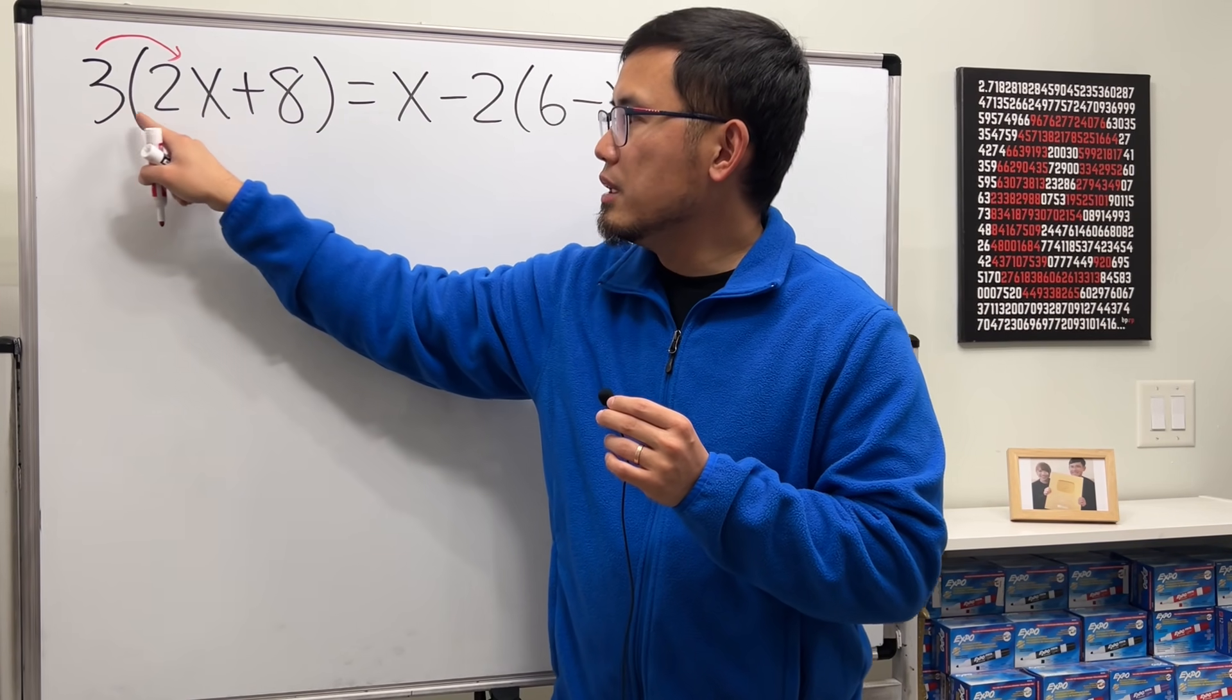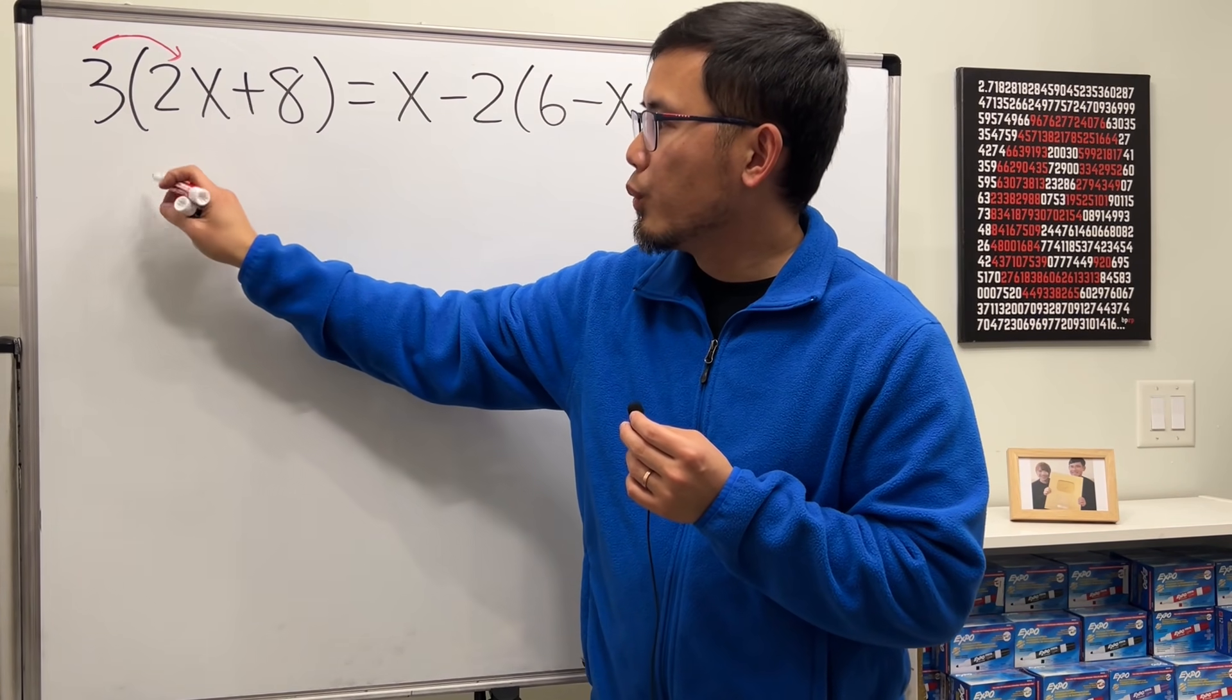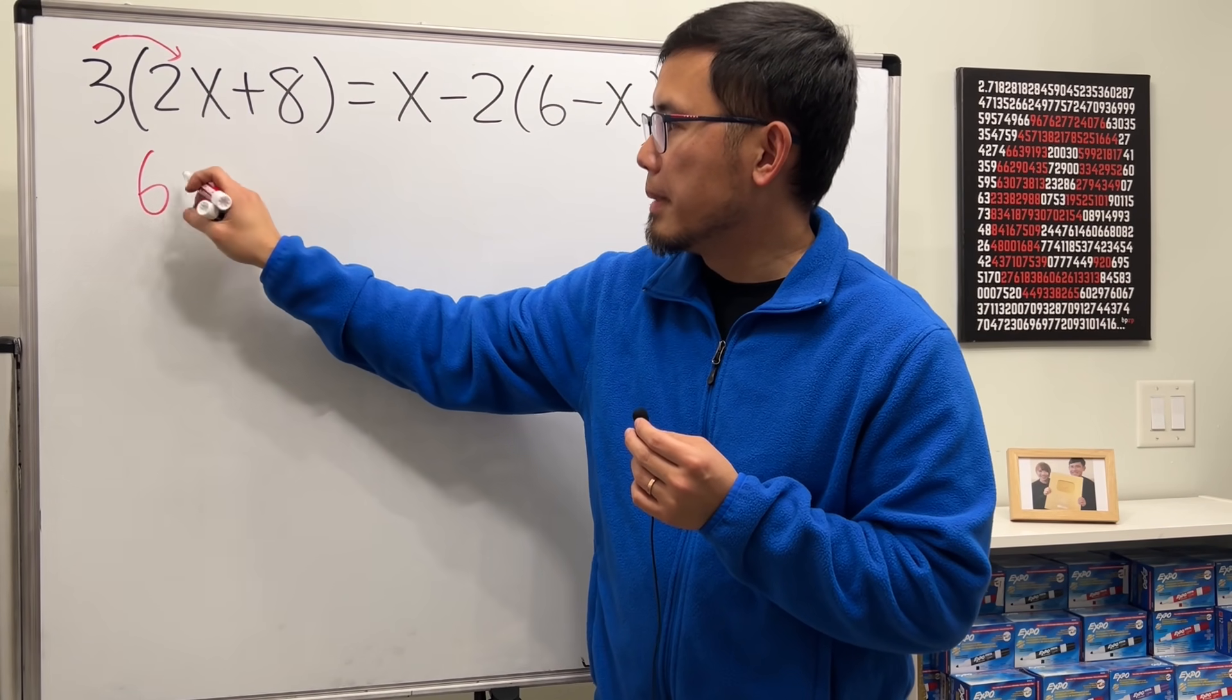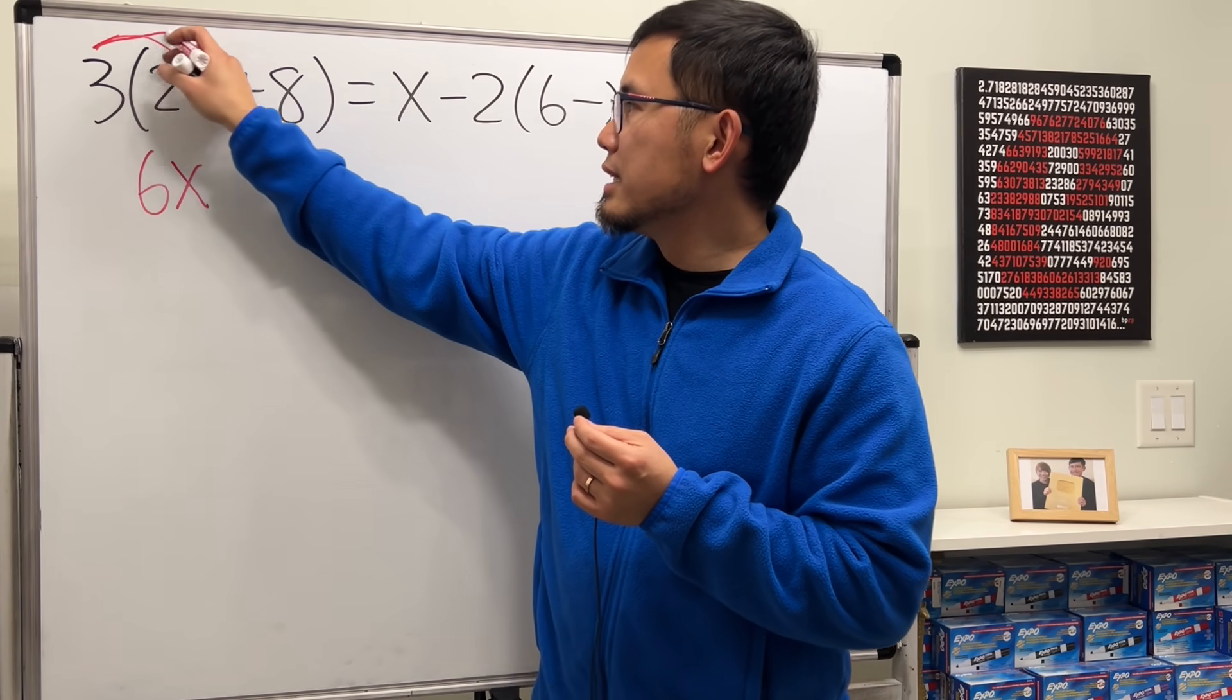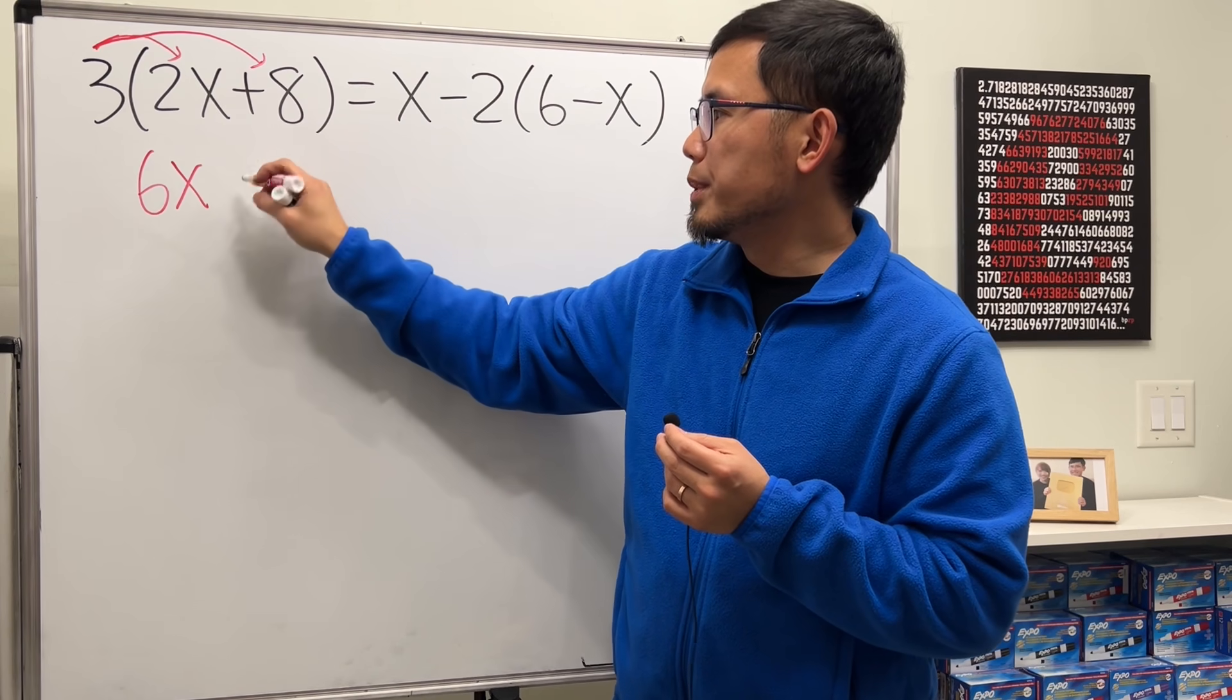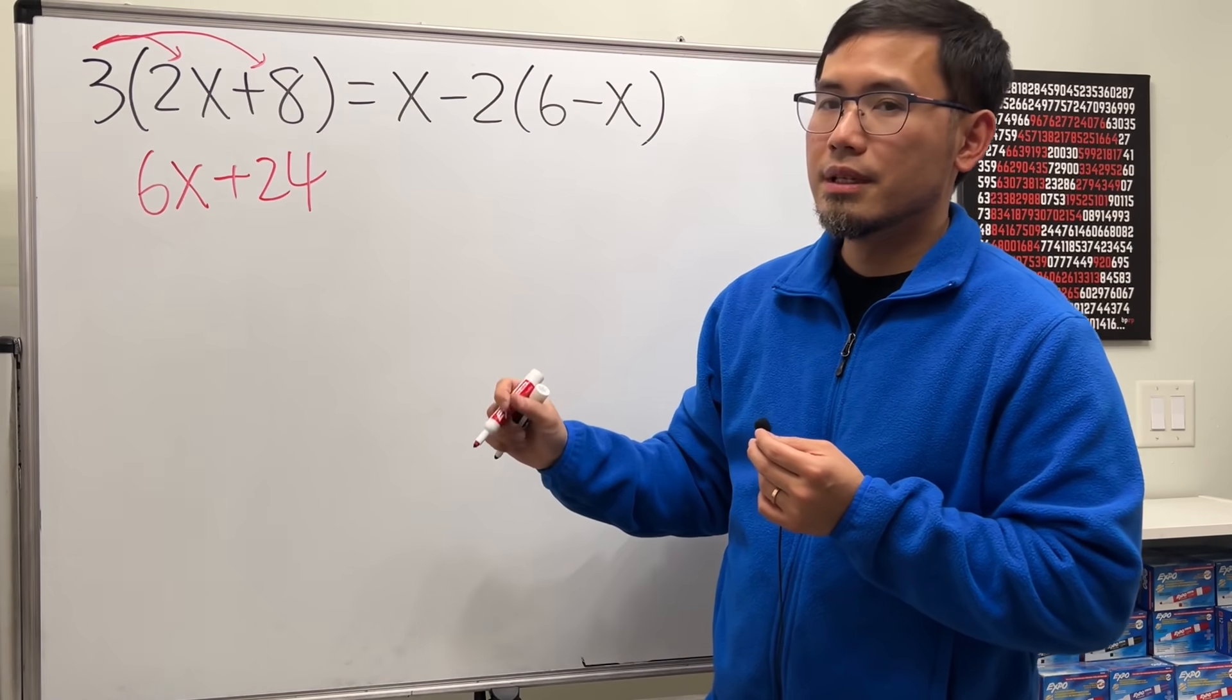Meaning we do 3 times 2x. So we first do 3 times 2, which is 6, and then multiply by x, so just put on x. So we have 6x. And then we do 3 times 8, and that's going to be positive. And then 3 times 8 is 24.